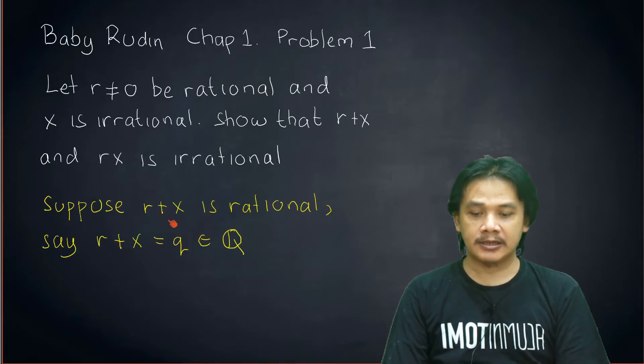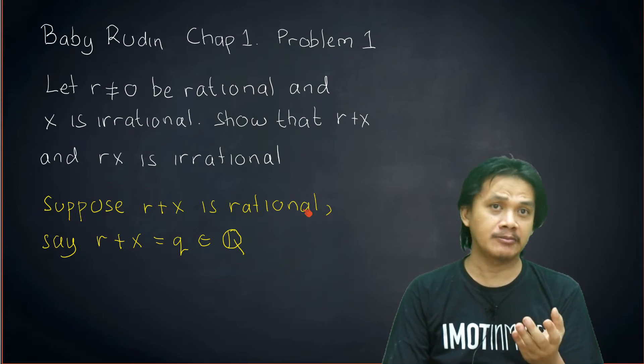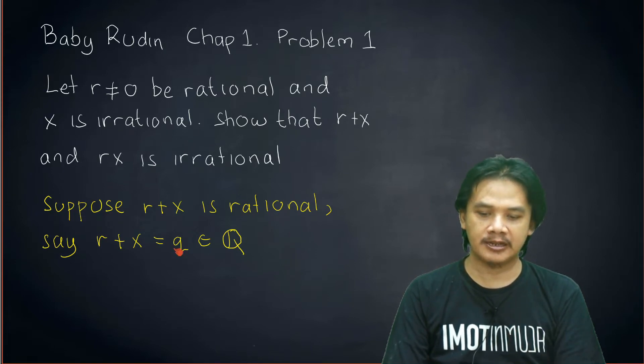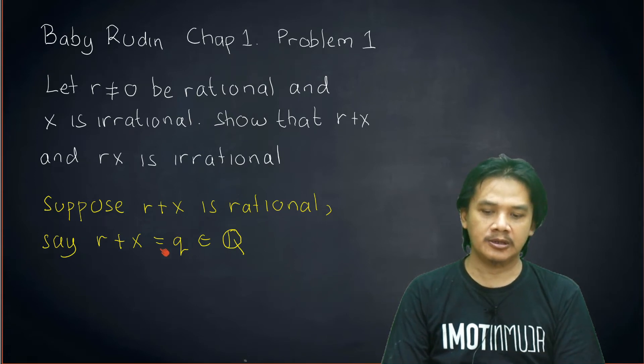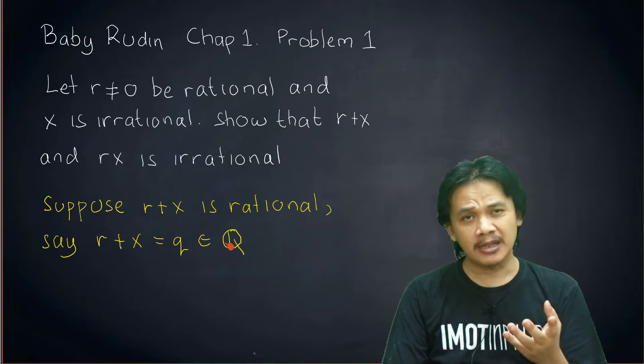Suppose r+x is rational, and we can give a name to this rational number. Say that r+x equals q, where q is an element of ℚ, the rational field.